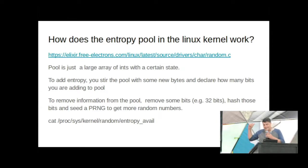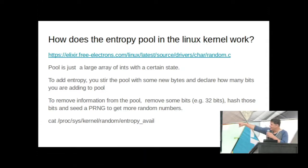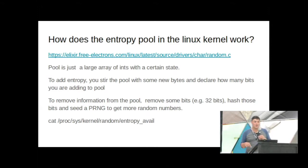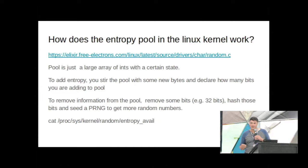That's actually the single C file for the kernel's random implementation, though the comments are horribly outdated. The pool is just a large array of ints with a certain state. If I know that state — say it's all zeros — how many bits of entropy are in that pool? Zero. Zero bits of entropy, because I know the state of it. Since everything is deterministic from there, if I ever did know the state of that pool, I can know everything downstream.